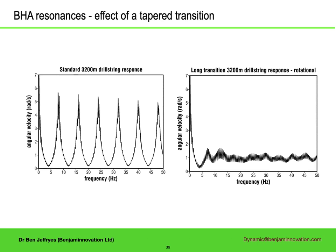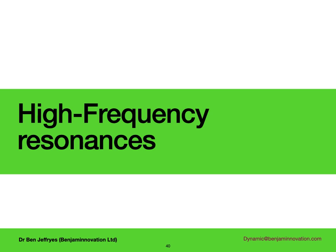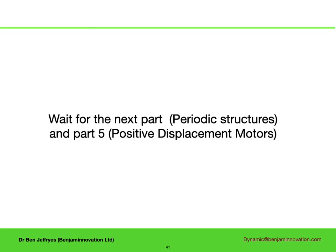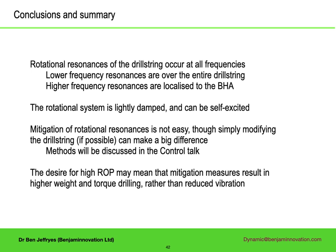I'm afraid I'm going to have to disappoint you if you are waiting to learn about HFTO — High Frequency Torsional Resonances. They require a bit more theory and are in presentations 3 and 5: presentation 3 for rotary ones, and 5 for oscillations below motors. Finally, an overall summary: there are rotational resonances of the drill string at both high and low frequencies. The low frequency ones are whole drill string resonances; the high frequency ones are localised to the BHA. The rotational system is always lightly damped and very often is self-excited. If you want to know more about mitigation, other than putting more metal in the hole, this will be discussed in the 7th presentation on control.